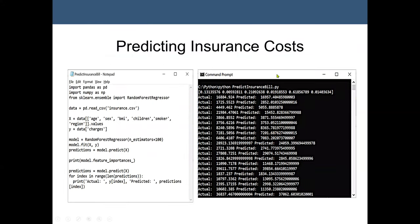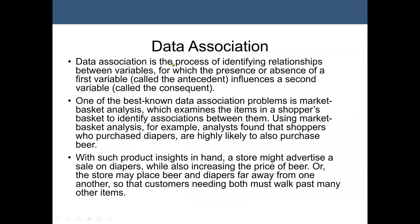Next is data association, and we normally use the term association rule. The concept is that we analyze a dataset to find out if A influences B. A simple example is market basket analysis — we may analyze a supermarket database to see if customers who buy bread also buy peanut butter. We need a threshold value, and we use confidence and support values to tell us if there is a strong association between the two items.